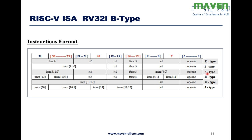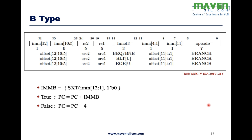We have seen R-type, I-type, and S-type. Now let's look at B-type — branch type instructions. The opcode indicates branch type and involves a 12-bit immediate value. We perform sign extension of the immediate and append 0 at the LSB to get a 32-bit value. If the condition is true, the program counter becomes PC plus immediate value; if false, PC becomes PC plus 4.